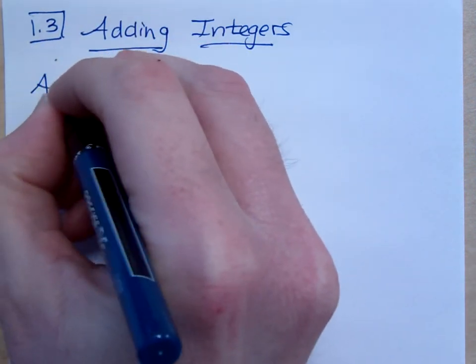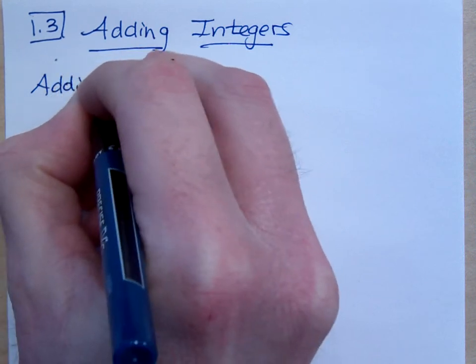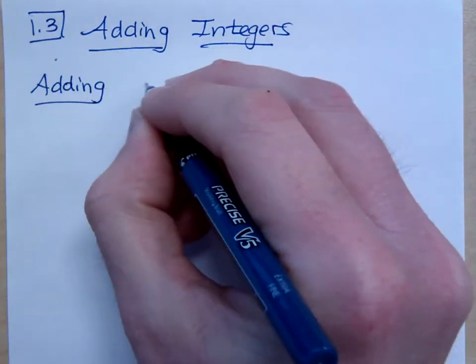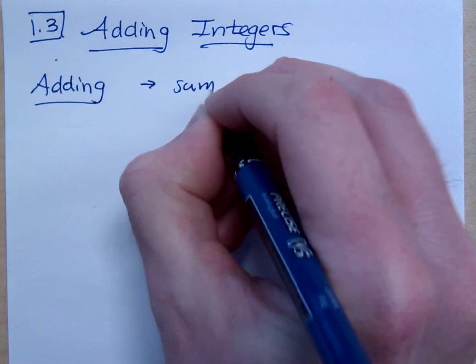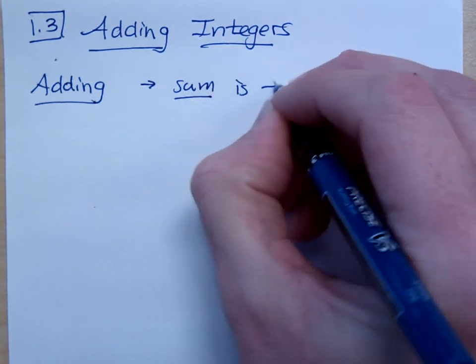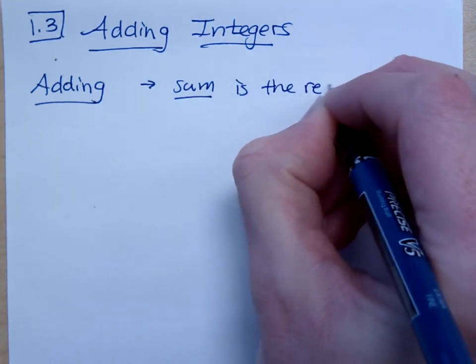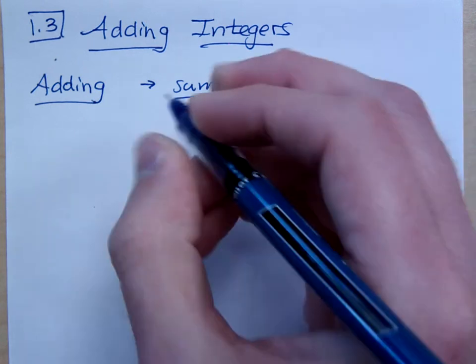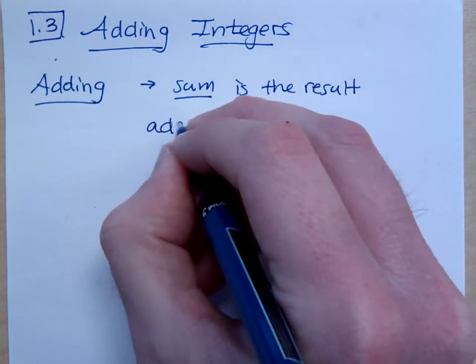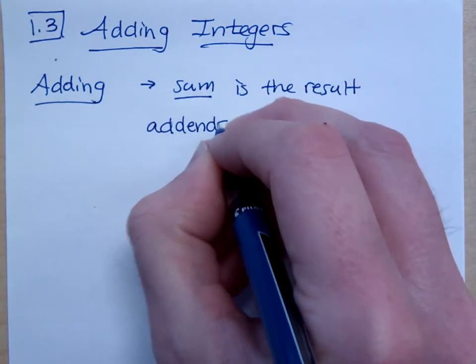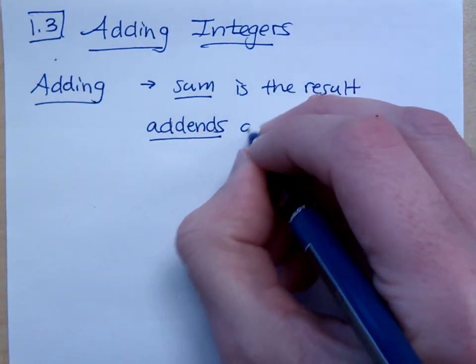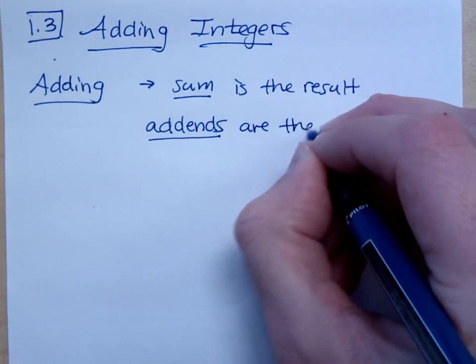When we are talking about adding, I want you to understand the correct terminology here. The word sum is the result of adding. And the pieces that you are adding are called the addends. These are the pieces of the sum.